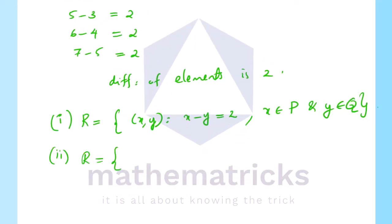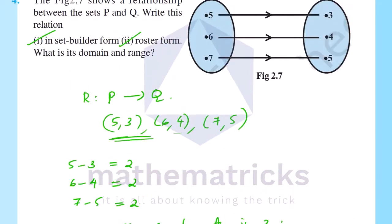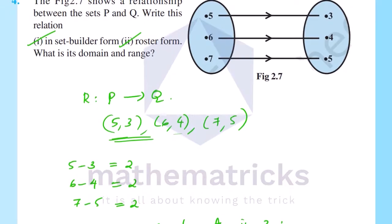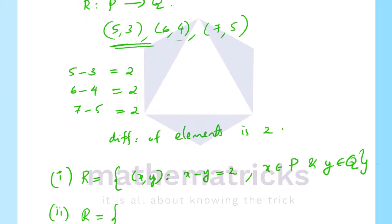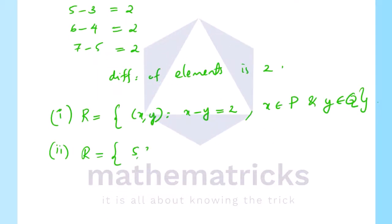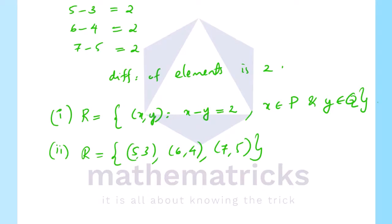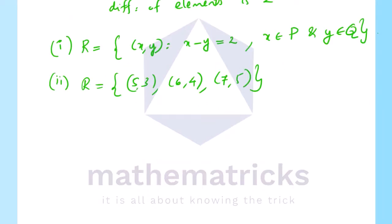The roster form of R is {(5,3), (6,4), (7,5)}, since x belongs to P and y belongs to Q. The domain is {5, 6, 7} and the range is {3, 4, 5}.